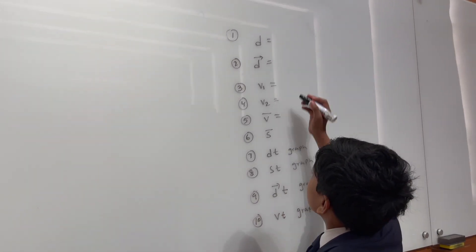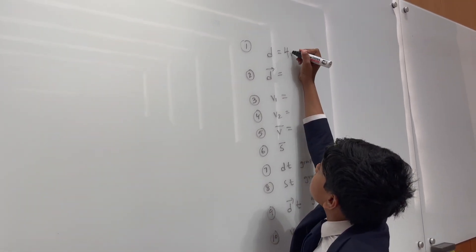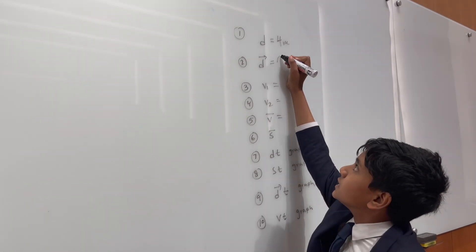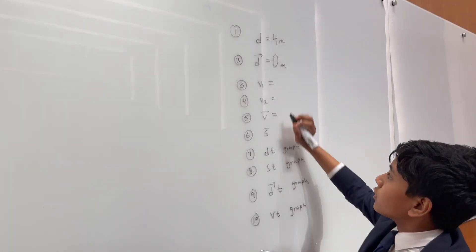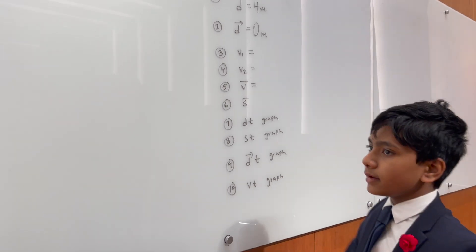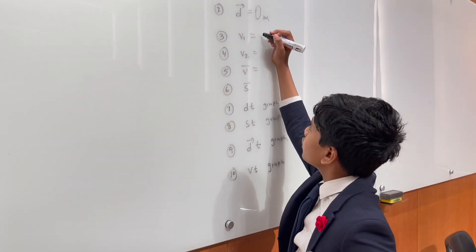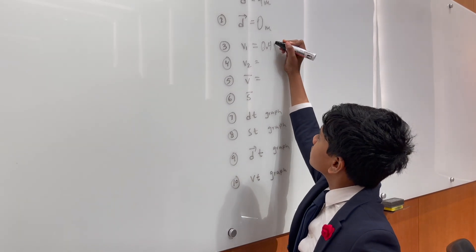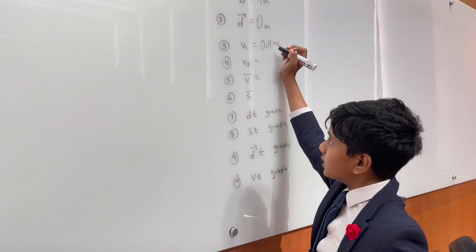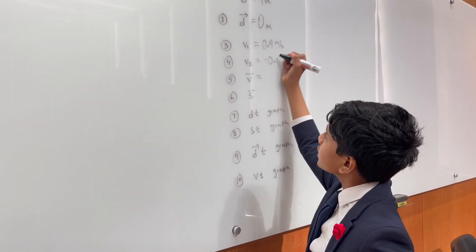Okay. So, distance traveled is obviously 4 meters. The displacement, since you return to where you were before, is 0 meters. The V1, as we calculated, is 0.4 meters per second. V2, as we calculated, is negative 0.4 meters per second.